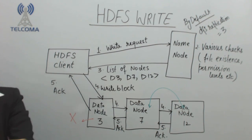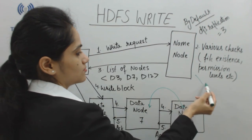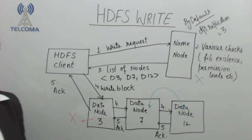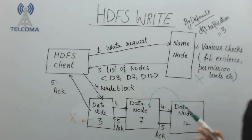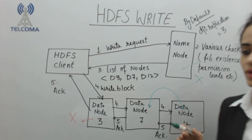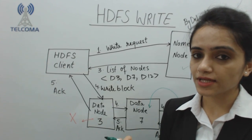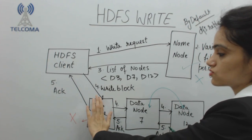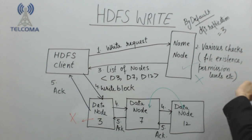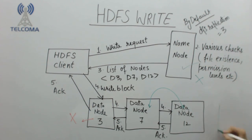What if the name node itself fails? That is why we require a highly reliable software or data center for the name node. The name node monitors under-replication — for example, if a data node fails, it identifies another available data node and creates an additional replica to maintain the required three replications.